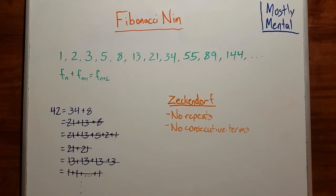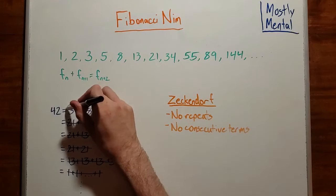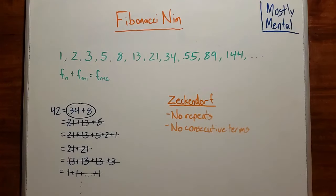And that rules out sums like this and this. And it seems like that's enough to leave us with just one representation. And that turns out to be true in general. Every whole number can be written uniquely as the sum of distinct, non-consecutive Fibonacci numbers. This is known as the Zeckendorf representation.